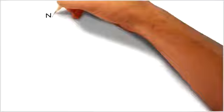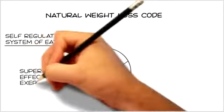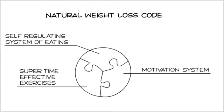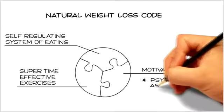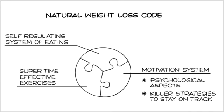There really is no danger of ever falling off this program because it's not a rigid system and it's flexible enough to move with you. I've made the Natural Weight Loss Code very easy to follow. So how does the Natural Weight Loss Code work as a whole? Simple. It uses a combination of a self-regulating system of eating and super time effective exercises all knitted together with a motivation system to automate the whole program. Most weight loss programs don't address the psychological aspects of losing weight. But the Natural Weight Loss Code tackles this head on and gives you killer strategies which don't rely on willpower alone to help you achieve awesome results and stay on track.